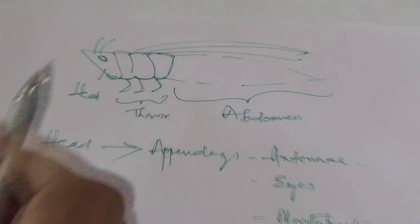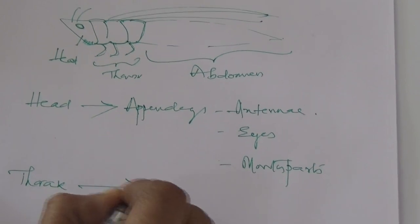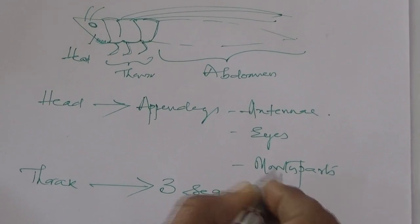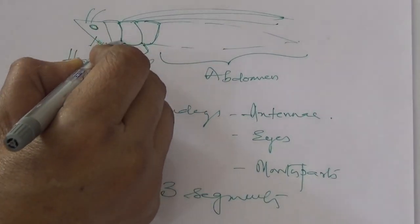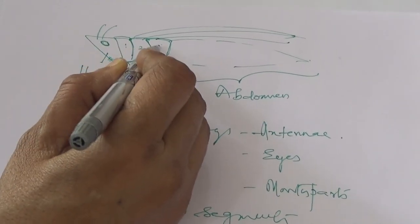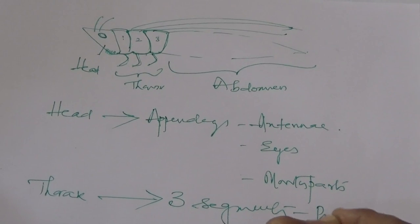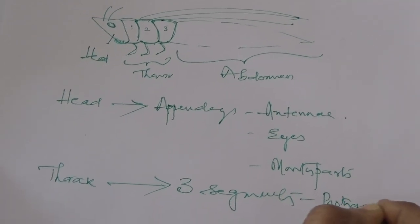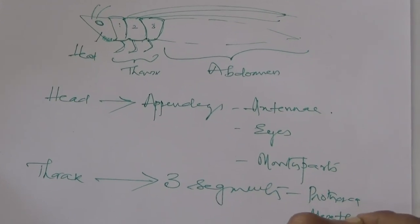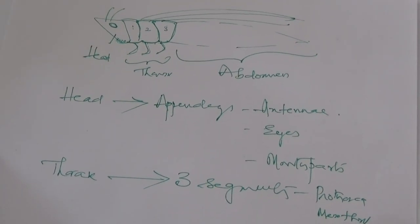Now we go to the second part, that is the thorax. The thorax has three segments. When you closely observe, you can see the three segments: the first one, second one, and third one. These are the three segments of the thorax, which we call prothorax, mesothorax, and metathorax. These are the three thoracic segments.